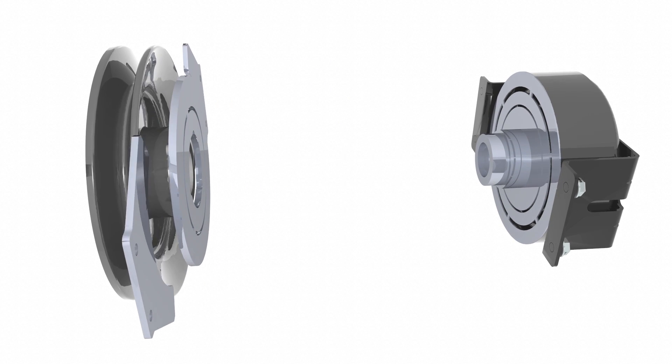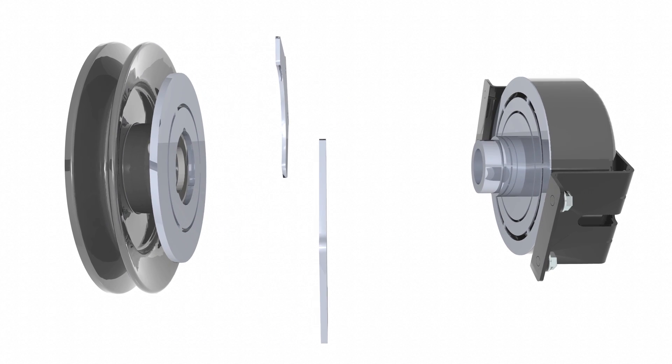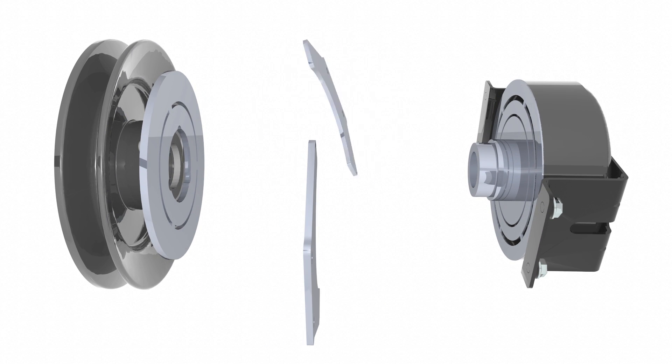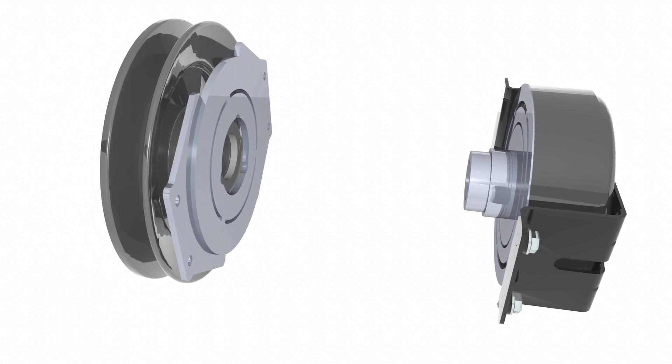PTO clutch brake designs have either an adjustable brake shroud or two opposing flippable brake pads like the one shown in this animation.